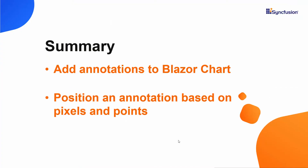Okay, that's it. Now let me summarize the main points we discussed in this video. We have seen how to add annotations to Syncfusion Blazor charts, and we discussed how to position an annotation based on pixels and points. If you would like to see a working example of the chart in this video, you can download it from the GitHub link in the description. I have also provided a link in the description where you can see if you qualify for a free license key to use our Blazor products through our community license. If you found this video useful, don't forget to click the like button and subscribe to our channel to watch more videos like this. Thanks for watching.